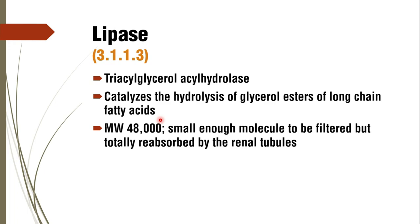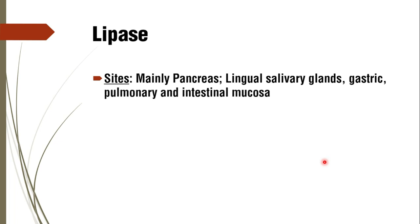Both serum amylase and serum lipase are filtered through the kidney, but because lipase has an even smaller molecular weight it gets totally reabsorbed and will not appear in urine. For an MCQ asking which enzyme appears in urine, the answer is serum amylase only. The main source of lipase is the pancreas, with small quantities also from lingual salivary glands, gastric lipase, and pulmonary and intestinal mucosa.